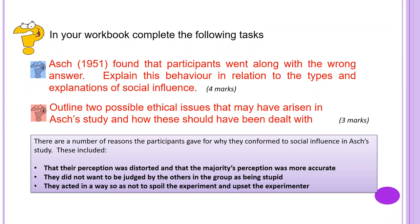Two marks for each ethical issue that is clearly described with a brief explanation of how it can be dealt with. ASH used deception with confederate stooges and put participants in stressful, embarrassing situations. Physiological measures indicated increased anxiety just before they gave their response, meaning he also failed to protect them from harm. Procedures to address deception include debriefing or retrospective consent. The levels of anxiety were minimal, and cost-benefit analysis should be used to determine if those levels were justified given the importance of the findings.